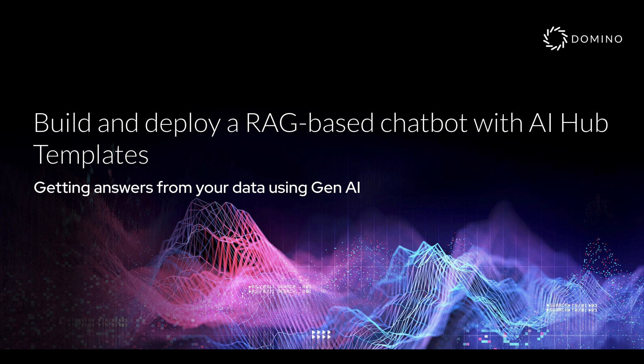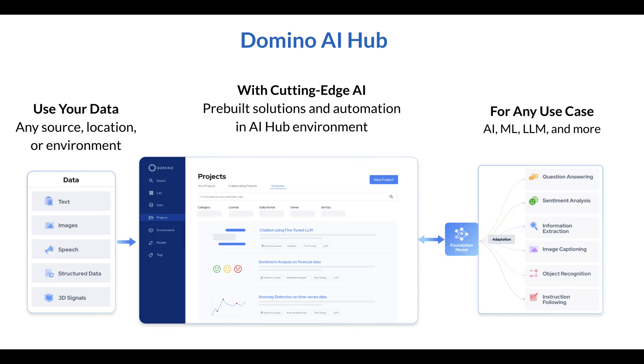ChatGPT gives me a good start, but to get great results, it needs to know more domain knowledge to give the most accurate results, and I don't want to send all my internal data to OpenAI. The new Domino AI Hub enables quickly building AI applications from pre-built solutions curated from the best of open source that are enterprise-ready.